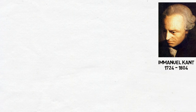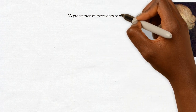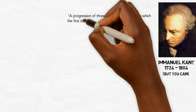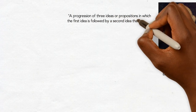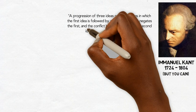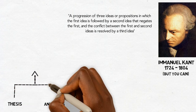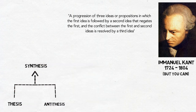Already in the 18th century, Immanuel Kant wrote about how progress in the world of ideas takes the form of a triad: a thesis, an antithesis, and a synthesis. They are like a progression of three ideas or propositions in which the first idea is followed by a second idea that negates the first, and the conflict between them is resolved by a third idea. The third idea, the synthesis, becomes then a new thesis and the cycle repeats itself.